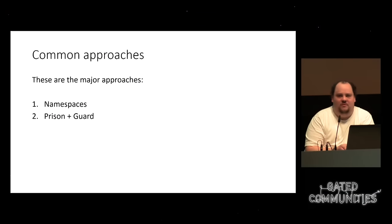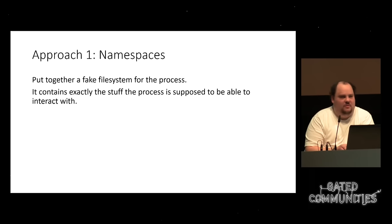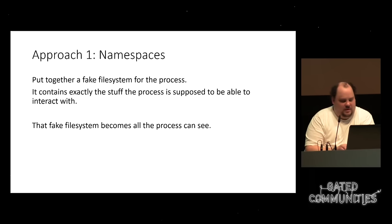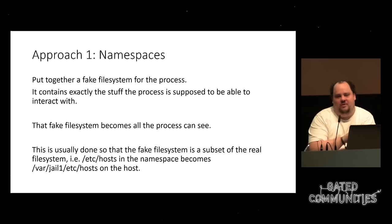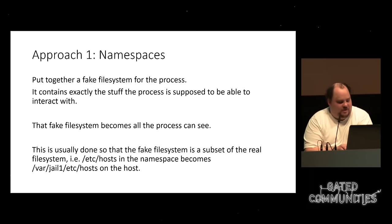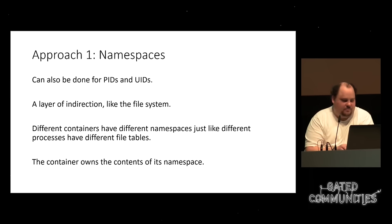Common approaches: namespaces or a prison and guard. The namespace idea is to put together a fake filesystem that looks like a real filesystem but only has the parts the process really needs. That fake filesystem becomes the actual filesystem that process sees. Files like /etc/hosts or /etc/resolv.conf might be needed if the process does DNS lookups. The namespace concept can also be used for UIDs and PIDs.